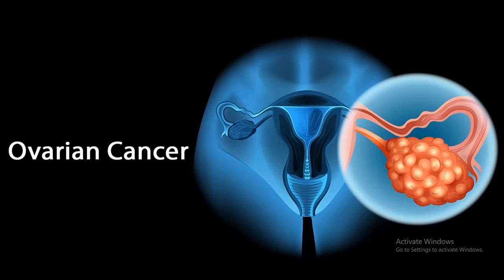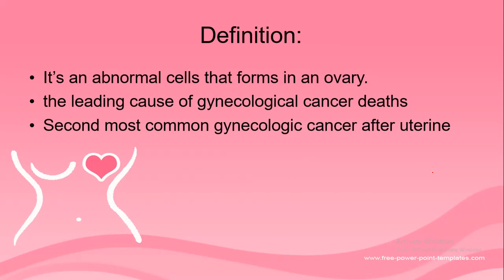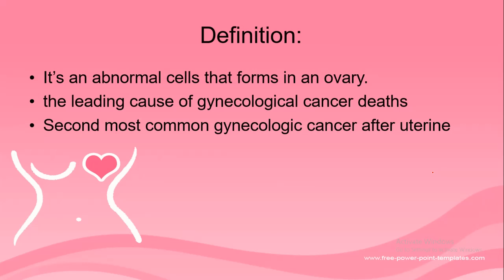In this video, we will tackle two organs involved in cancer: the ovary and the cervix — ovarian cancer and cervical cancer. Ovarian cancer is defined as an abnormal cell that forms in the ovary. It is the leading cause of gynecological cancer death, but it is only the second most common gynecological cancer, after uterine cancer.